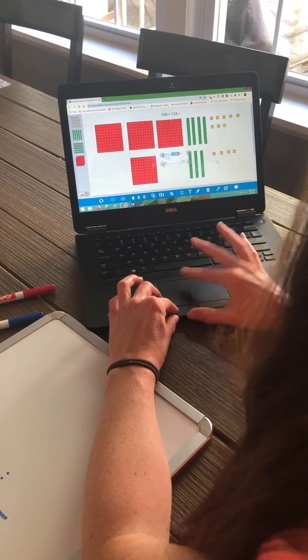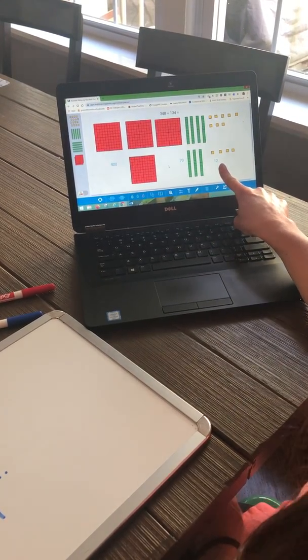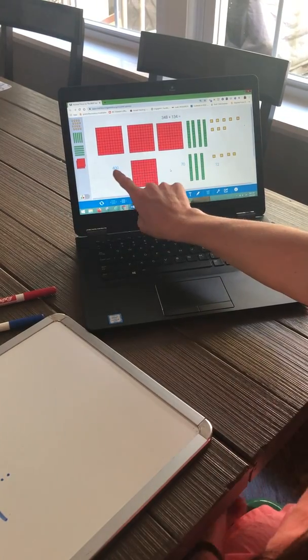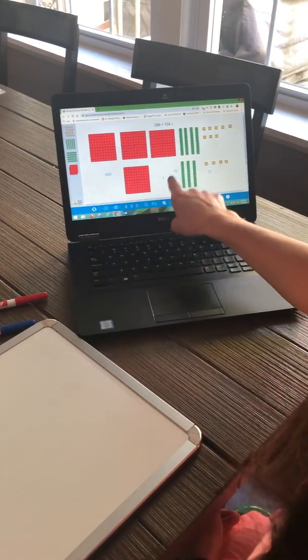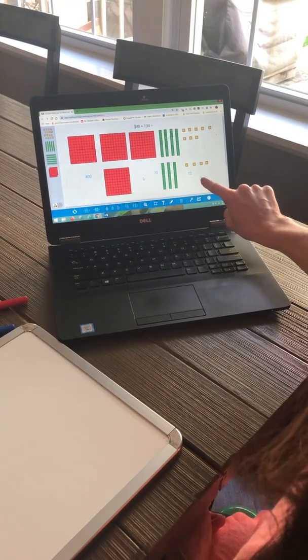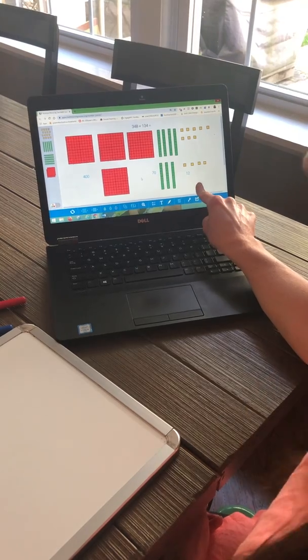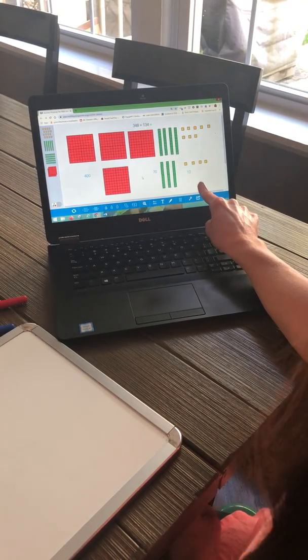So I've got 400, 70, and 12 1s. I can't squeeze those digits together and say that the sum is 4, 7, 12. I am 10 or more in my 1s place. So I am going to have to regroup by making a bundle of 10 1s.